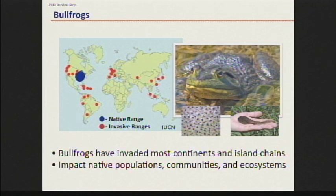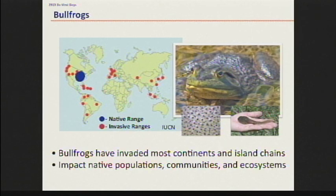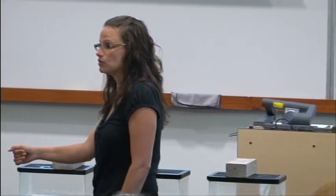The IUCN has dubbed them as one of the 100 worst invaders in the world, because they've invaded four continents, over 40 different countries, and all major island chains. They're causing changes in communities at all these places and are implicated in the decline of a lot of different species from multiple taxonomic groups.